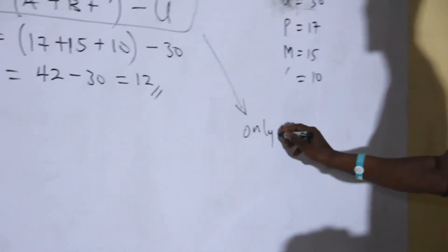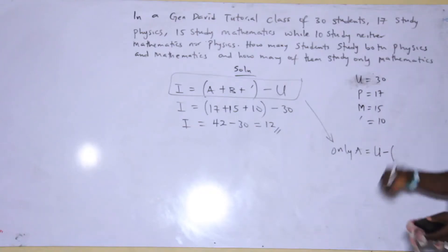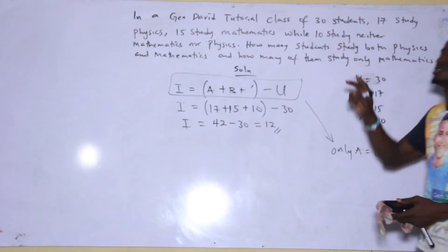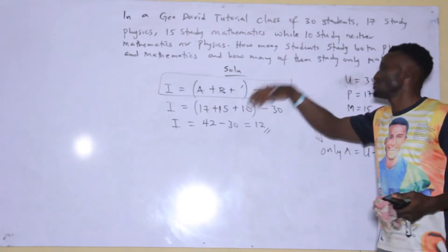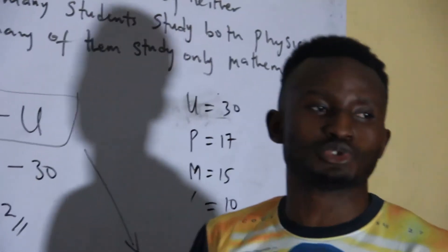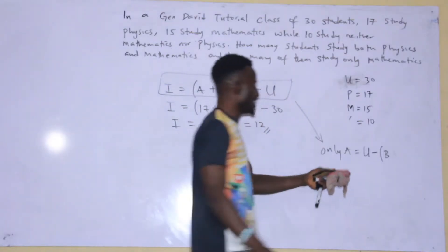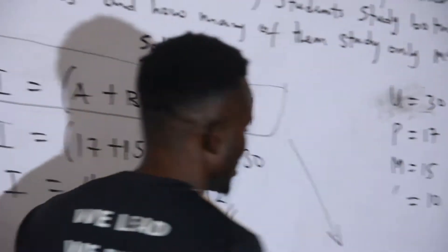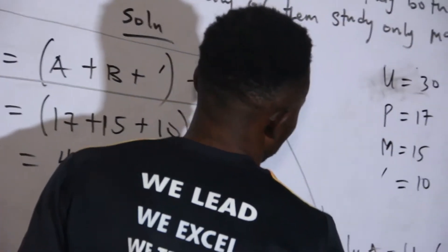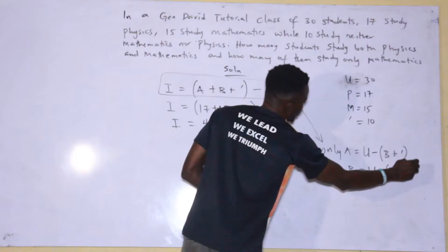If they say only A, the formula will be: only A equals the universal set minus B. This question only deals with two circles. Now, only A equals universal set minus B plus the complement. And if they ask what is only B, only B will now be universal set minus A plus complement.